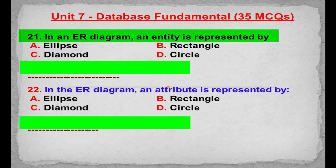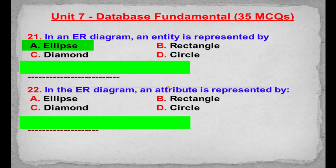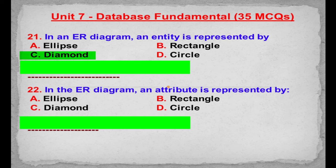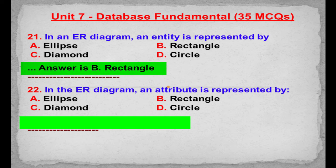MCQ number 21: In an ER diagram, an entity is represented by. Option A: Ellipse. Option B: Rectangle. Option C: Diamond. Option D: Circle. Correct answer is Option B: Rectangle.